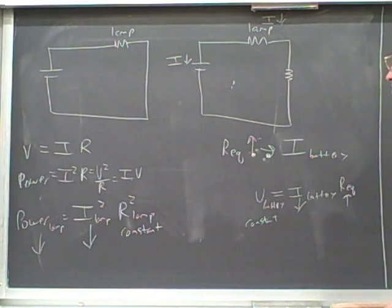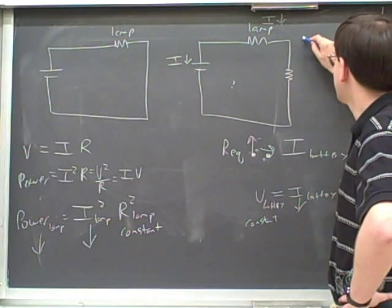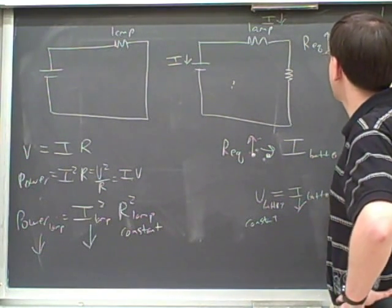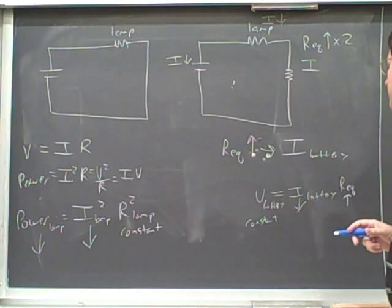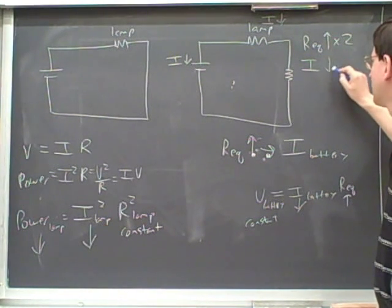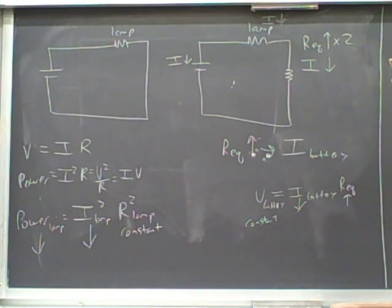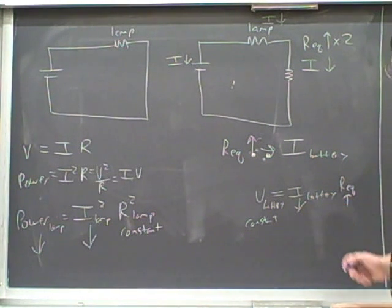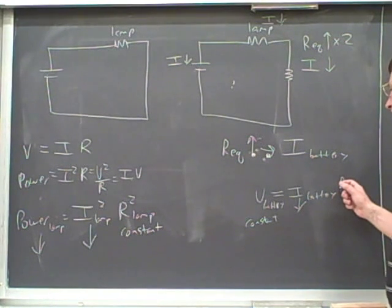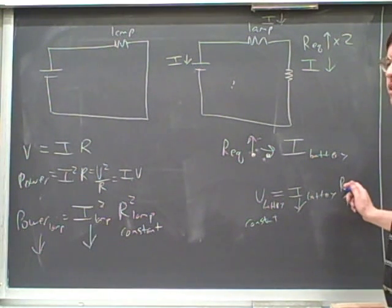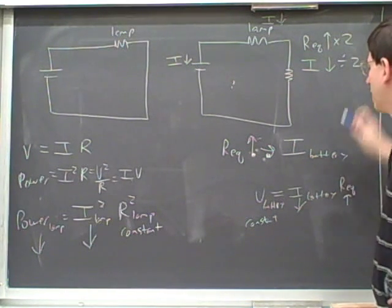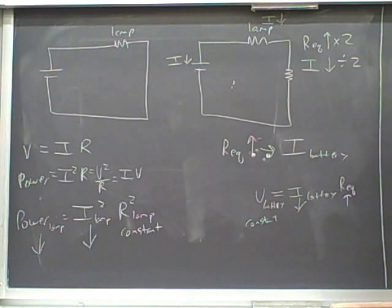Let's say that the total resistance has increased by a factor of two. By what factor has the current decreased? We can use this equation: I and R are inversely proportional, because V is constant. So if we're multiplying R by two, we have to divide I by two — otherwise these couldn't be equal to each other. So if the resistance is being multiplied by two, then the current would be divided by two.